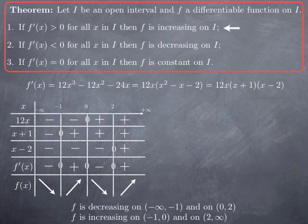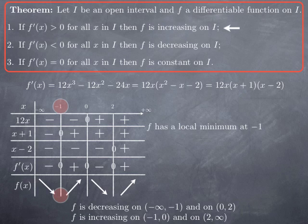One more observation: in obtaining the intervals of increase and decrease, we also get something more for free. At x = −1, the function is decreasing before and increasing afterwards — it goes down then up — so at x = −1, f takes its smallest value near that point. That means f has a local minimum at x = −1. Plugging x = −1 into the original function gives the minimum value of 0.